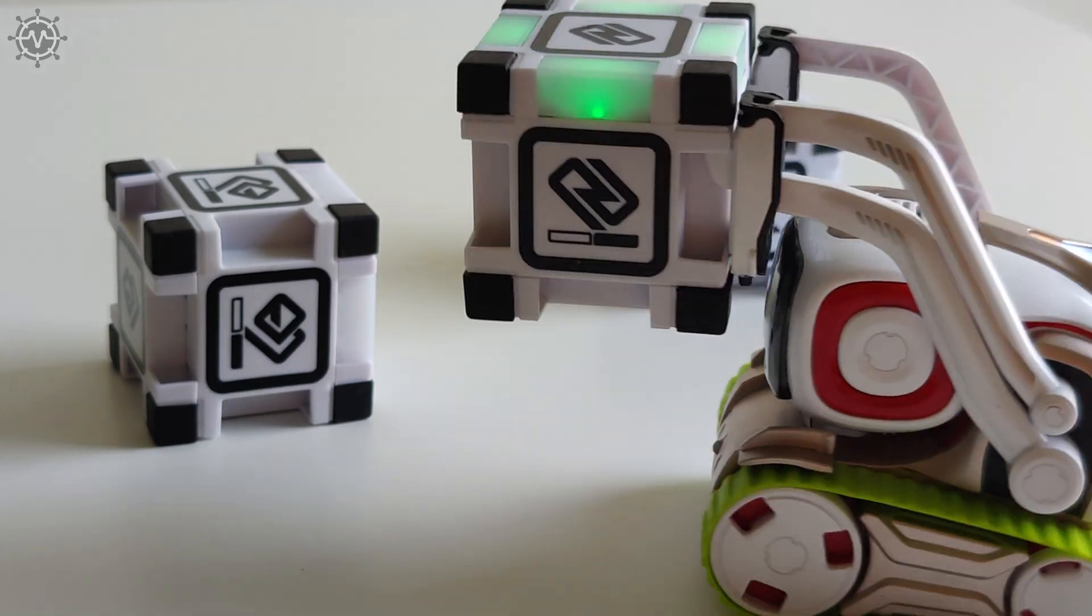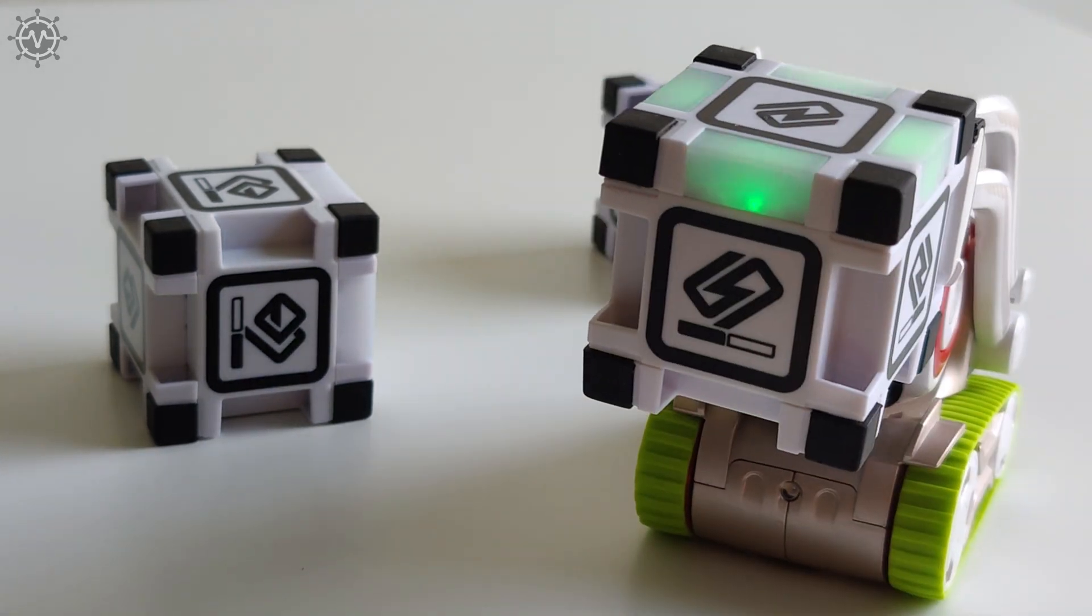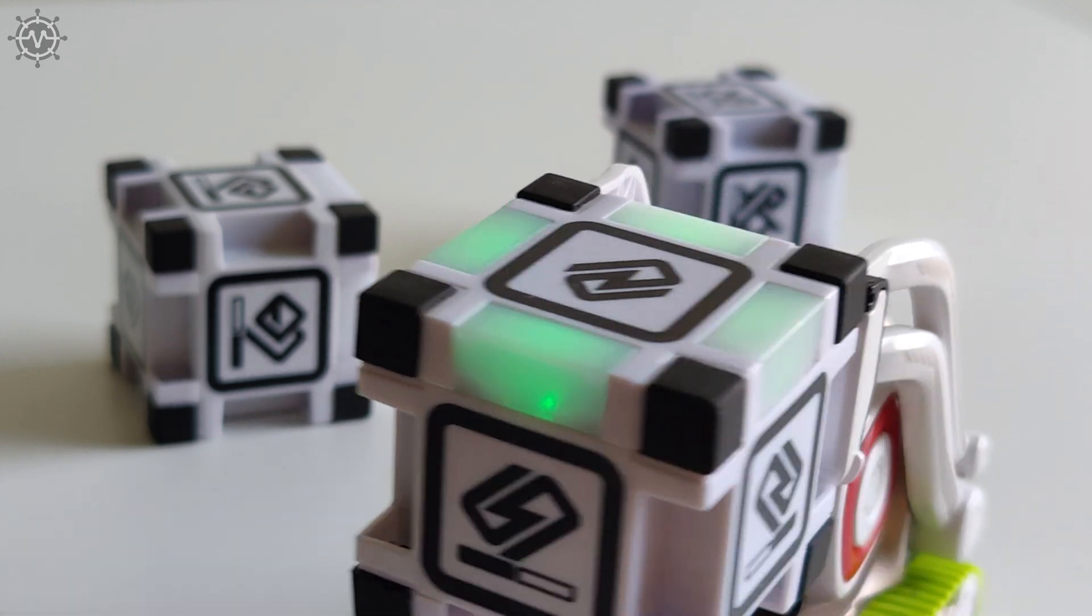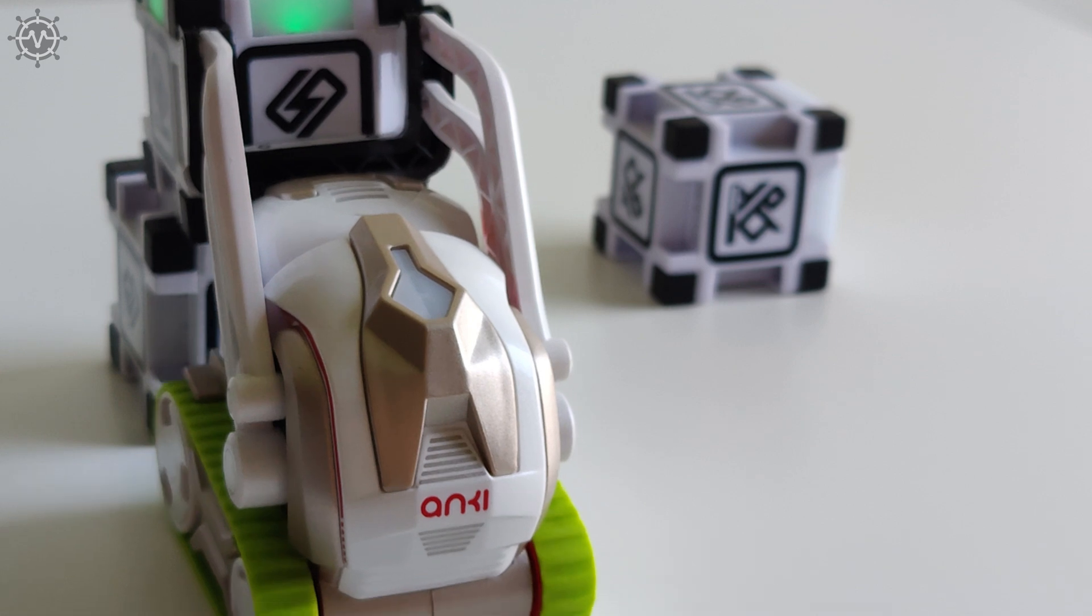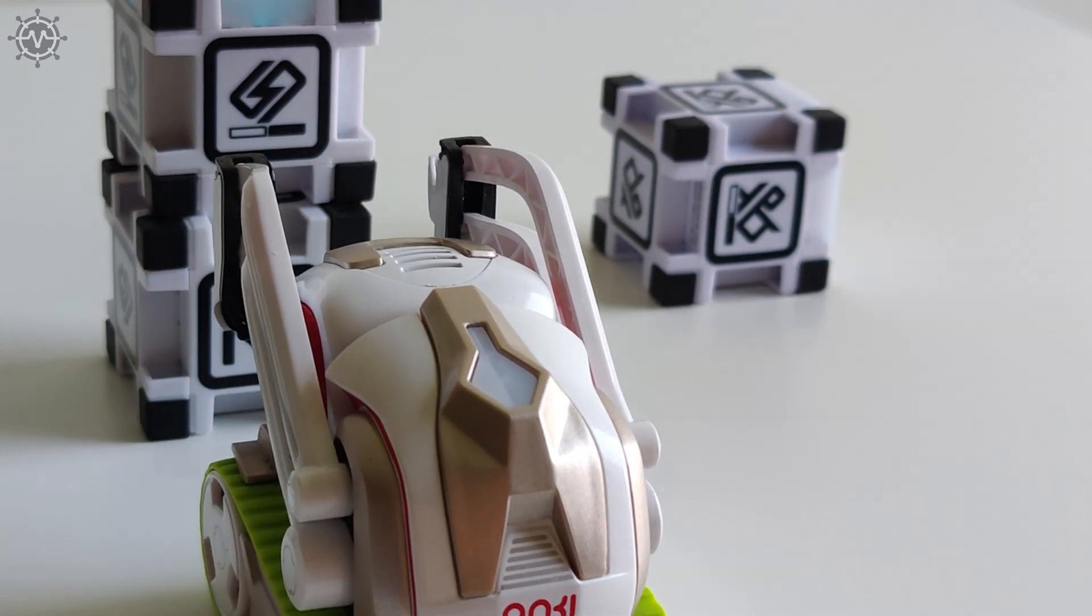Modern interactive cubes help the player to have fun with the Anki Cosmo robot, for example, playing various games or watching the robot's reactions, which are emitted by the LED lights - green, blue, or red - mixed in the cube.